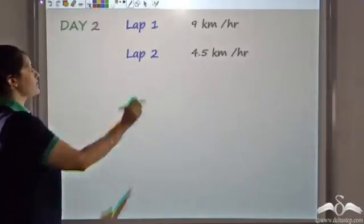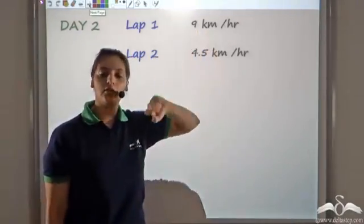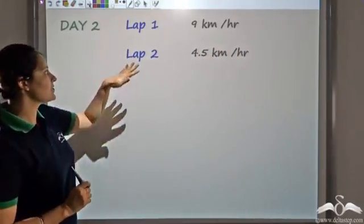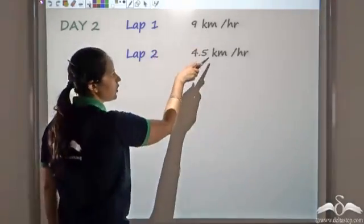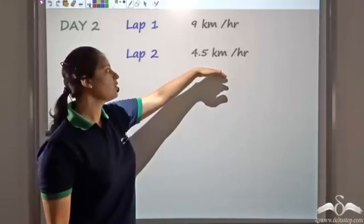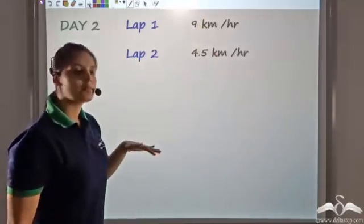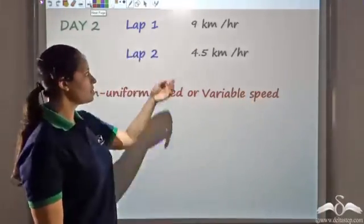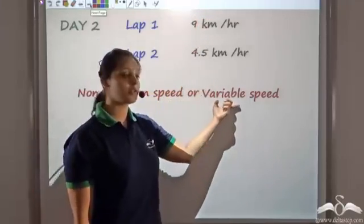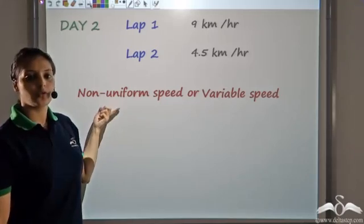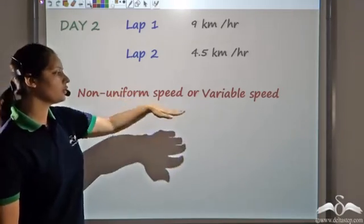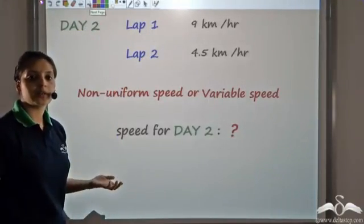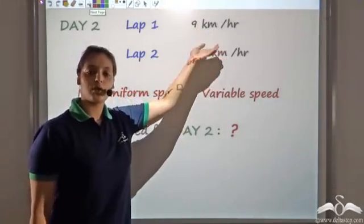So what I observe is: for Day 2, Lap 1 speed was 9 km per hour and Lap 2 speed was 4.5 km per hour. The speed is not remaining the same — the speed has decreased. So when the speed changes or does not remain the same, we call it non-uniform speed or variable speed. Since the speed is varying, it is variable or non-uniform speed. Now, since the speed is non-uniform, what is the speed for Day 2 — is it 9 or 4.5?